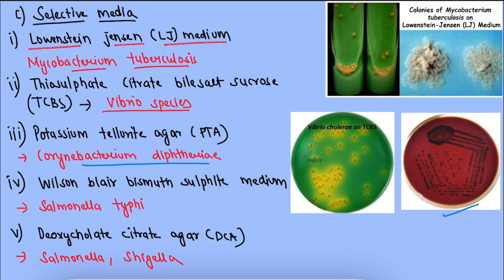Wilson Blair bismuth sulphite medium is used for isolation of Salmonella typhi. The last selective medium is deoxycholate citrate agar (DCA), which is used for isolation of Salmonella and Shigella.